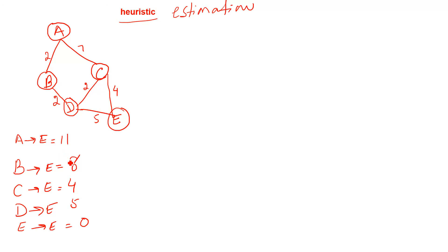The estimation cost from point A to E is 11. The estimation cost from B to E is 8, and so on. Forget about the actual cost — we only consider the heuristic approach here.